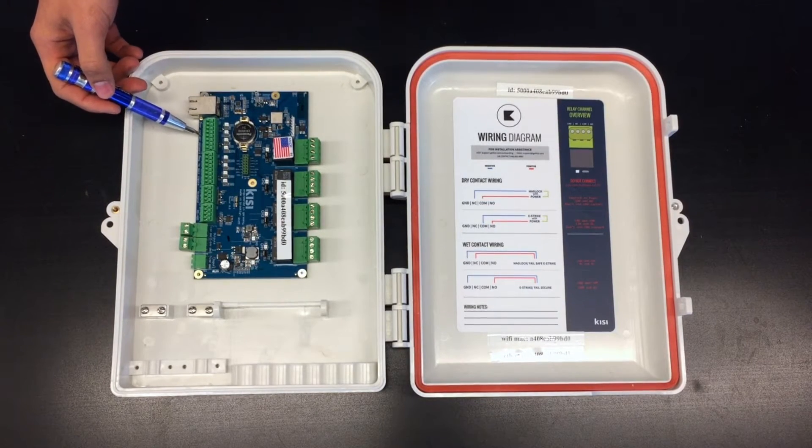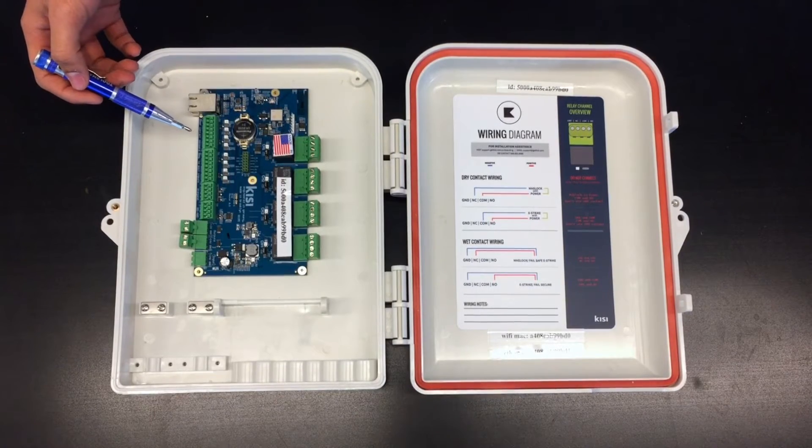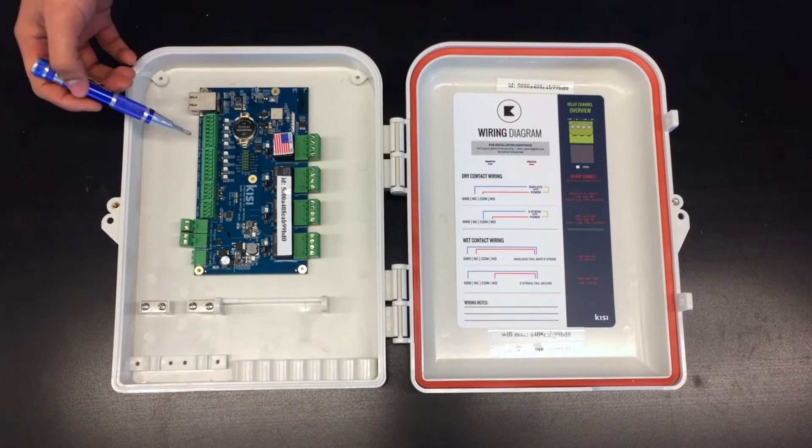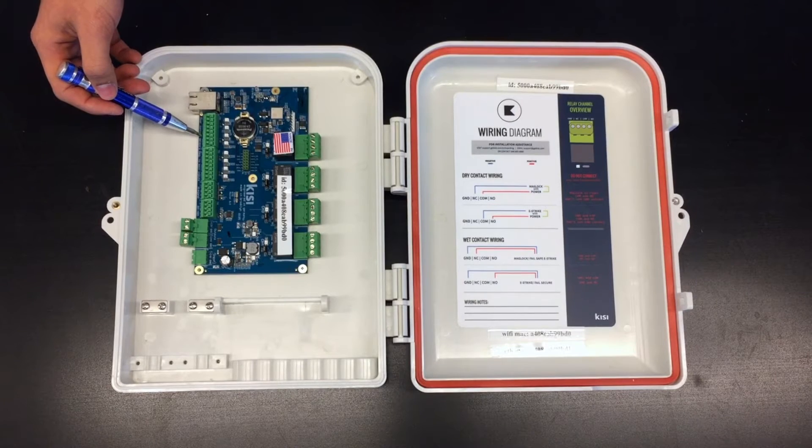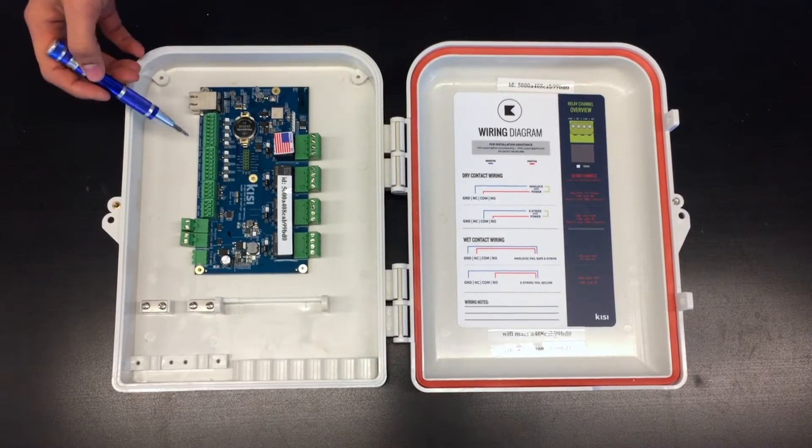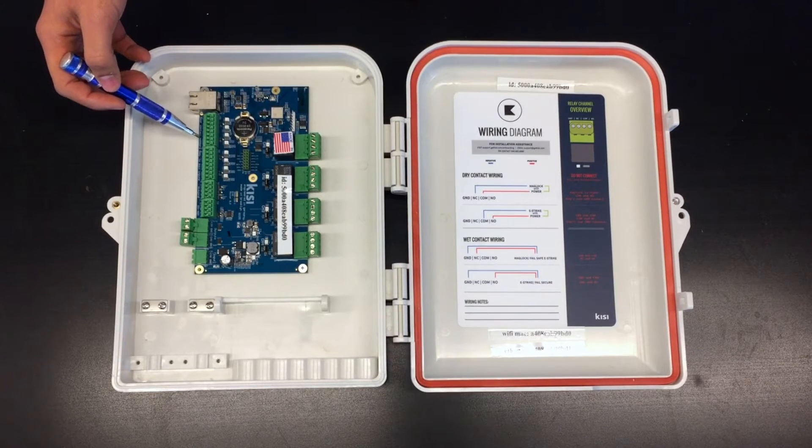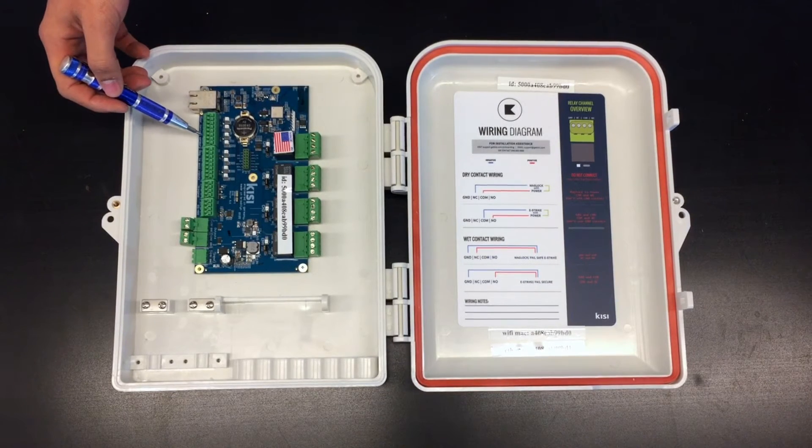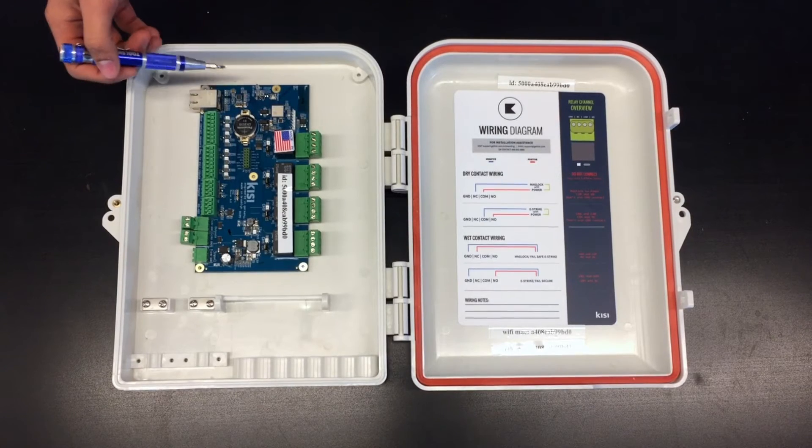Right next to that, we also have contact sensors, which means that in the Keezy dashboard you can see when the door is locked or unlocked. So regardless of if it's a Keezy-triggered unlock, you can see it. If a guest opens their door or something like that, you can basically see that in the Keezy dashboard.